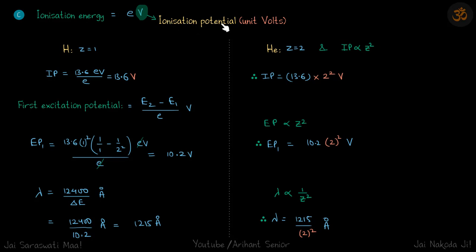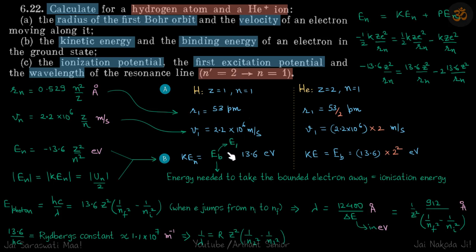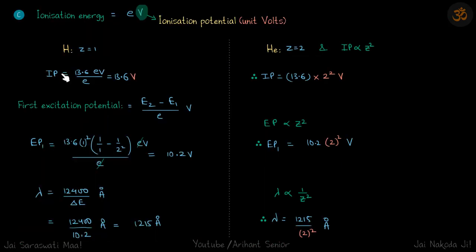For ionization potential: ionization energy can be written as eV, where V is ionization potential in volts. For hydrogen, ionization energy is 13.6 eV, so ionization potential = 13.6 eV / e = 13.6 volts. For helium, ionization potential is proportional to z², so it equals 13.6 × z² volts.